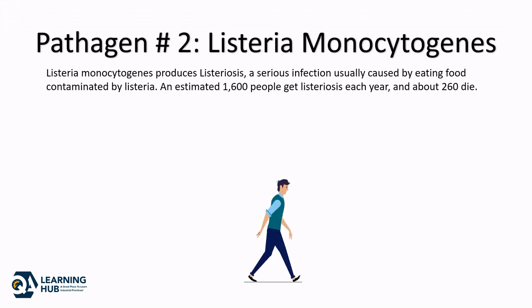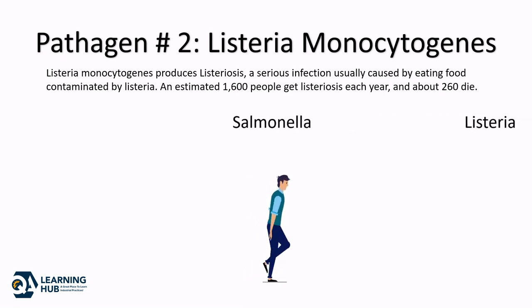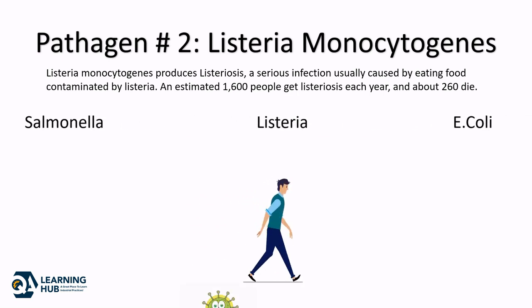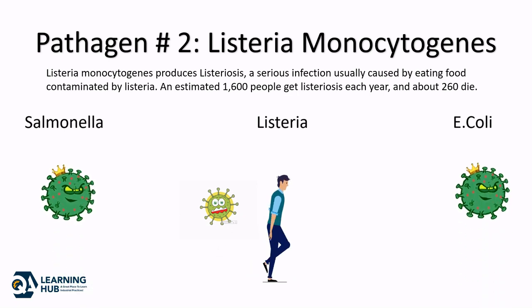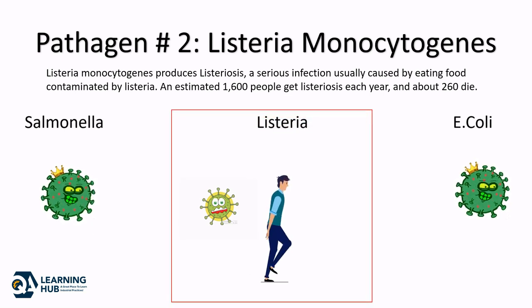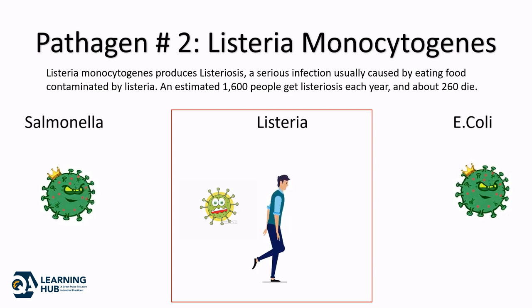We will cover all the pathogens one by one. We have covered Salmonella, and in this video we are going to cover all the important 9 aspects for the growth of the next deadly pathogen — Listeria monocytogenes. Listeria monocytogenes produces Listeriosis, a serious infection usually caused by eating food contaminated by Listeria. An estimated 1,600 people get Listeriosis each year and about 260 die.